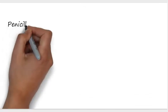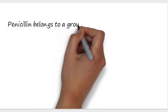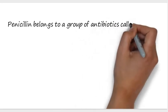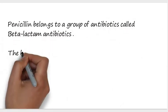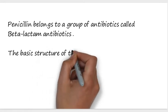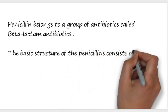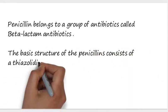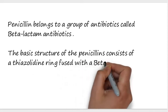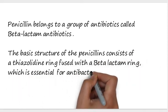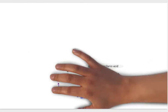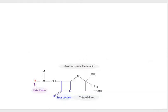Penicillin belongs to a group of antibiotics called beta-lactam antibiotics. The basic structure of penicillin consists of a thiazolidine ring fused with a beta-lactam ring, which is essential for antibacterial activity. You can pause the video to see this basic structure.